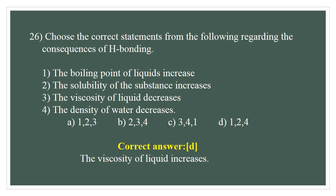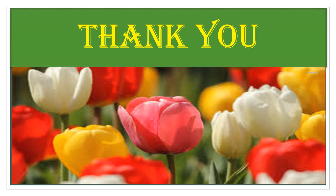Question number 26. Choose the correct statement about the consequences of hydrogen bonding. Boiling point of the liquid increases — correct. Solubility of the substance increases — correct. Viscosity of the liquid decreases — wrong; the correct statement is viscosity increases. Density of water decreases — correct. The correct answer is D, combining statements 1, 2, and 4.